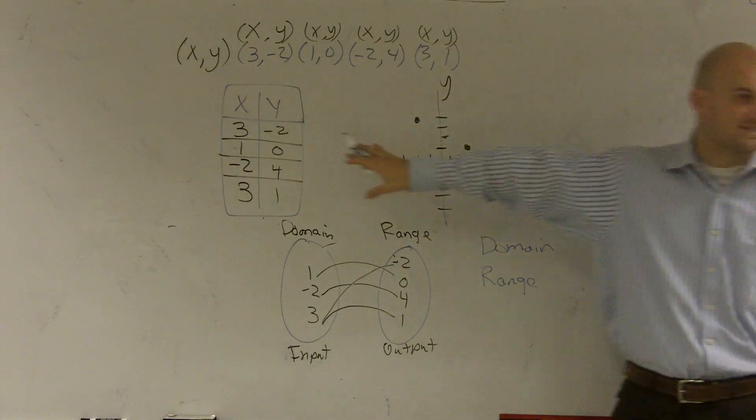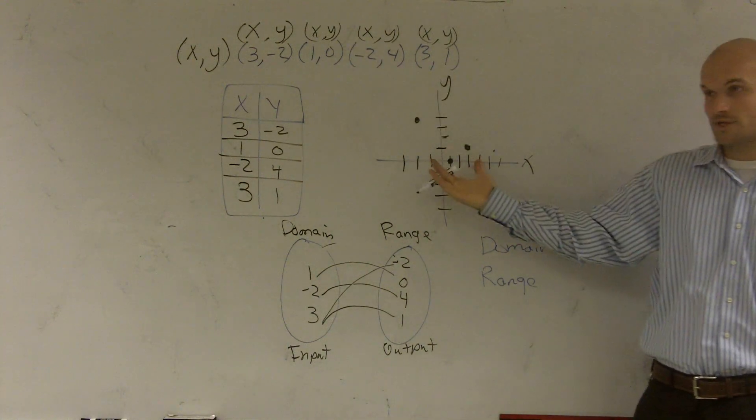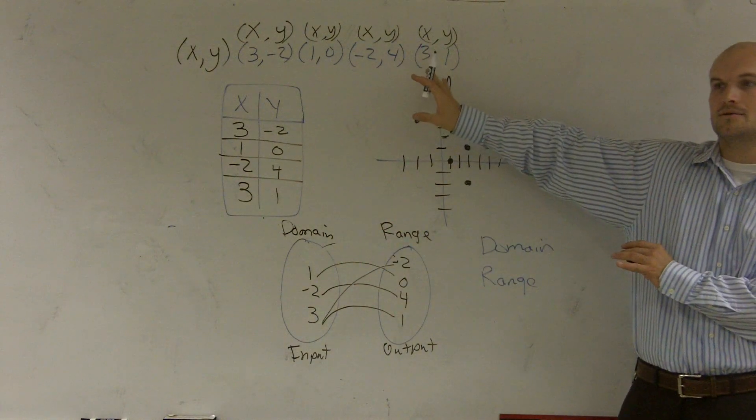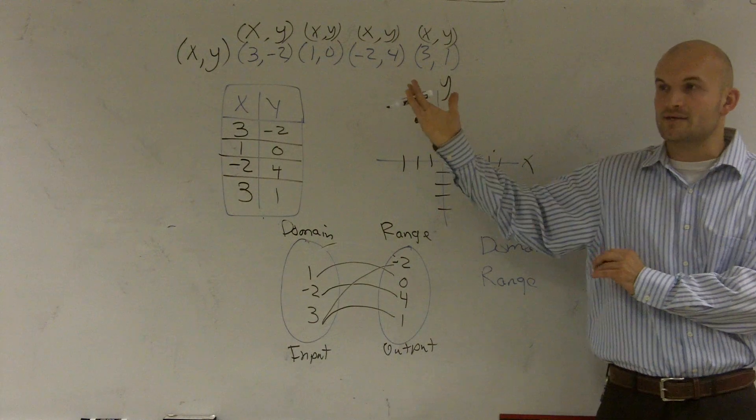Do you see how you have a table? Do you see the ordered pairs? Do you see the graph? Do you see the mapping? See how they're related? It's the same points I'm using, but we're just representing it in different ways.